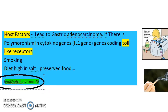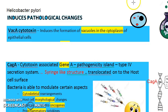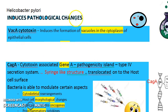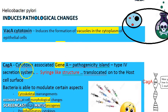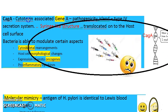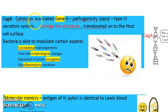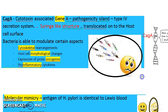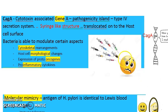To revise: the pathological changes induced by H. pylori include VacA, which creates vacuoles in the cytoplasm; CagA, the cytotoxin-associated gene A, which is a pathogenicity island encoding the Type 4 secretion system — giving syringe-like structures translocated onto the host cell to modulate its cytoskeleton, morphology, proto-oncogene expression, and pro-inflammatory cytokines.